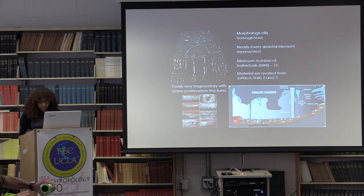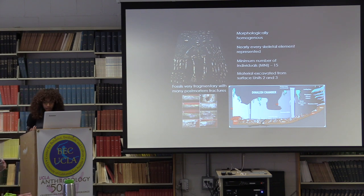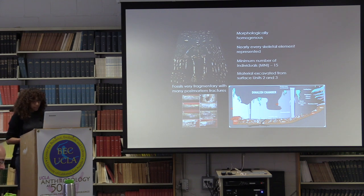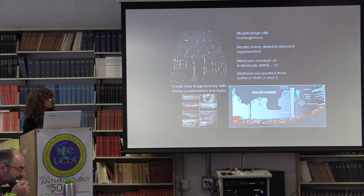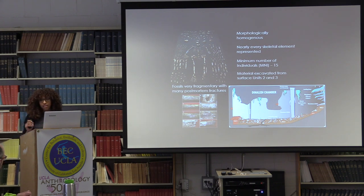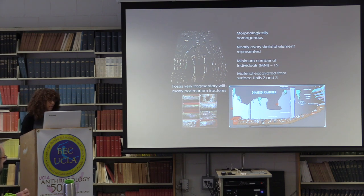The fossil material recovered is morphologically homogeneous and represents nearly every element of the skeleton from multiple individuals. To date, the published dental remains point to a minimum number of fifteen individuals, ranging from babies to old adults — though this is specific to this particular chamber. Recently, there have been excavations in other chambers in the system where more individuals were found, but most of that has not been published yet.